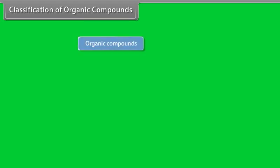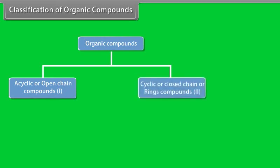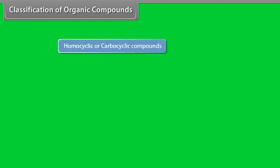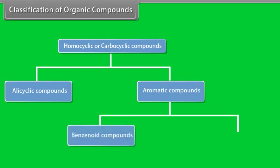Organic compounds can be grouped into acyclic or open-chain compounds and cyclic or ring compounds. Cyclic compounds can be further divided into homocyclic or carbocyclic compounds and heterocyclic compounds. Homocyclic can be further divided into alicyclic and aromatic compounds. Aromatic compounds can be further divided into benzenoid and non-benzenoid compounds.